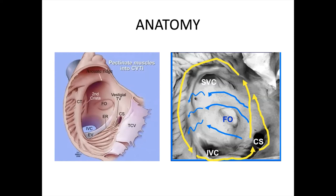On the right side of this picture, you can see a more actual demonstration of the direction of electrical flow. You can see the yellow arrow — this is the actual flutter circuit. The electricity also travels through the blue arrows on the back of the right atrium, where conduction is very slow, and that helps maintain the flutter circuit.